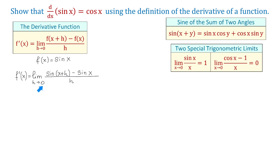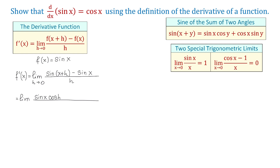At this point, we cannot use direct substitution because it will cause the numerator and the denominator to become 0. So instead, we will start by expanding sine of x plus h using this formula. We will have the limit of sine of x cosine of h plus cosine of x sine of h.